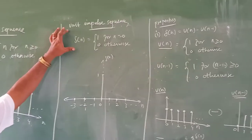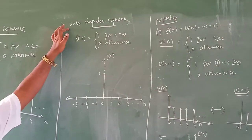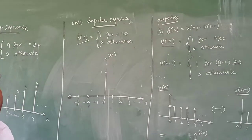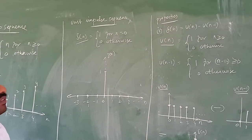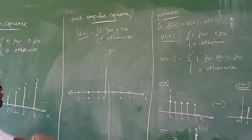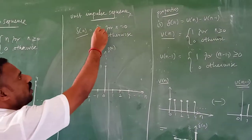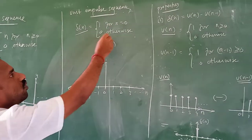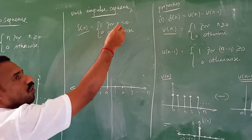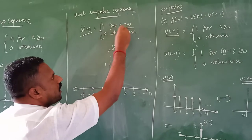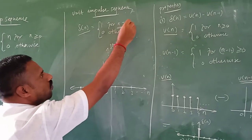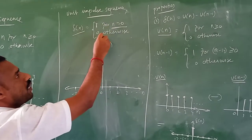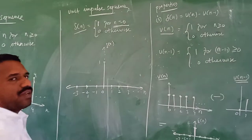For the impulse sequence, we denote it as del of n, where del of n equals 1 for n equal to 0, and 0 otherwise. Only when n equals 0 do we get the value 1; all remaining values are 0.